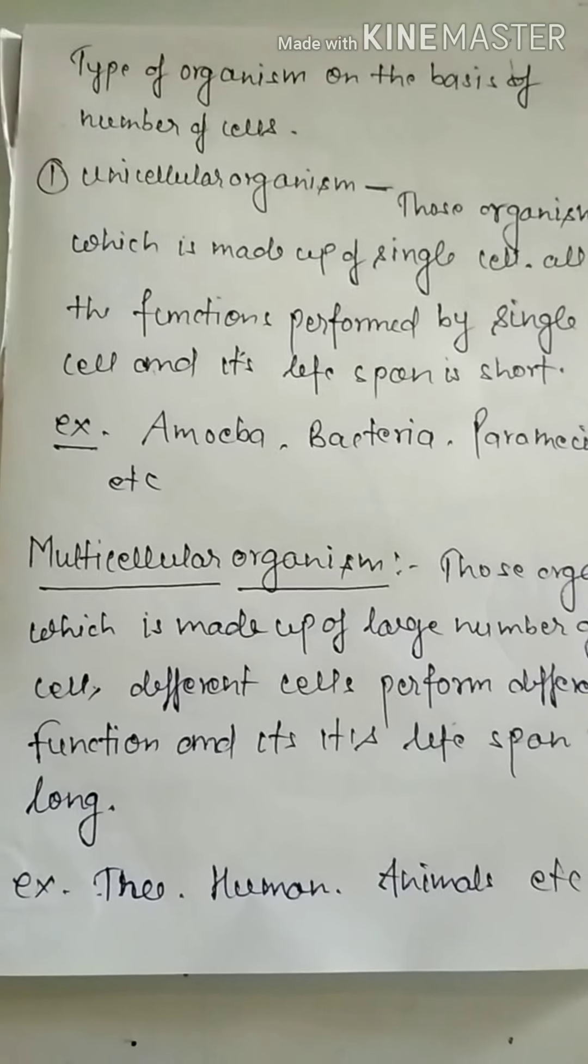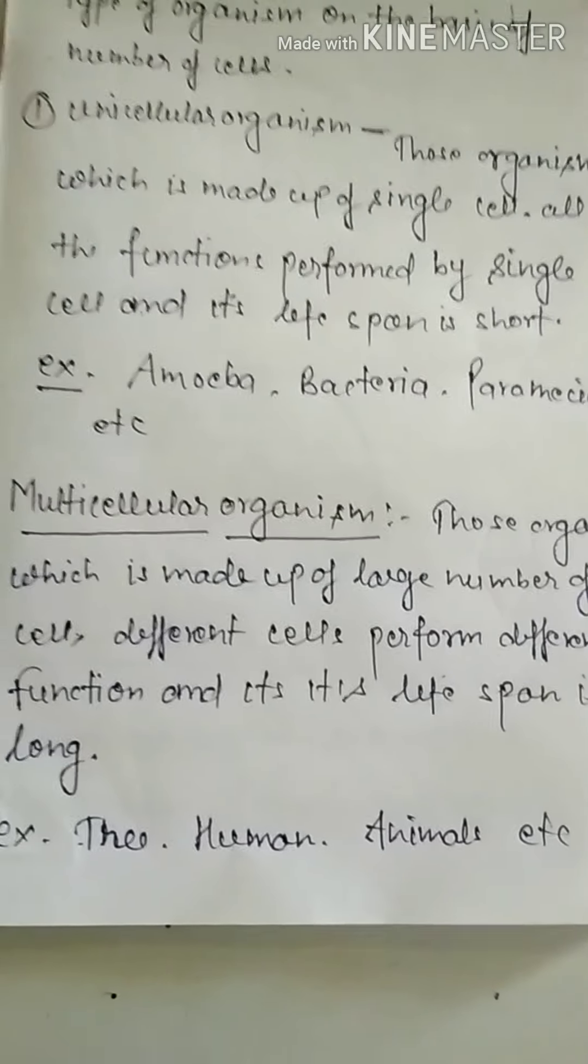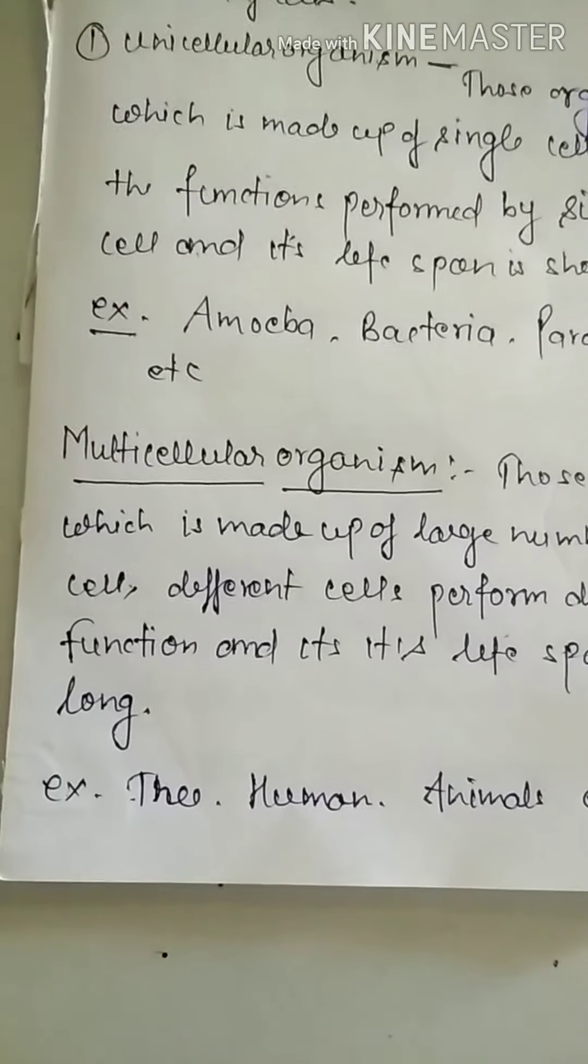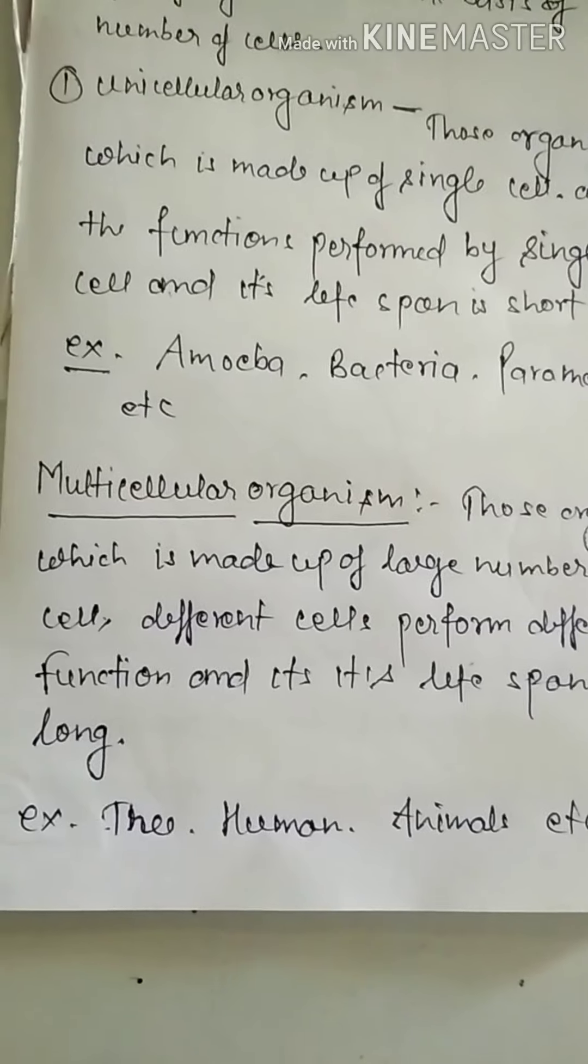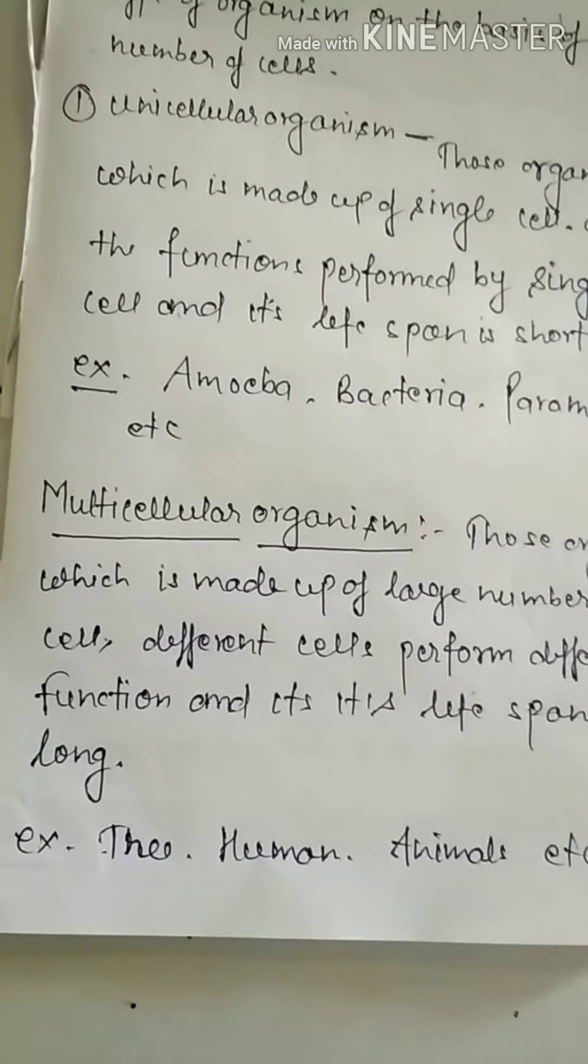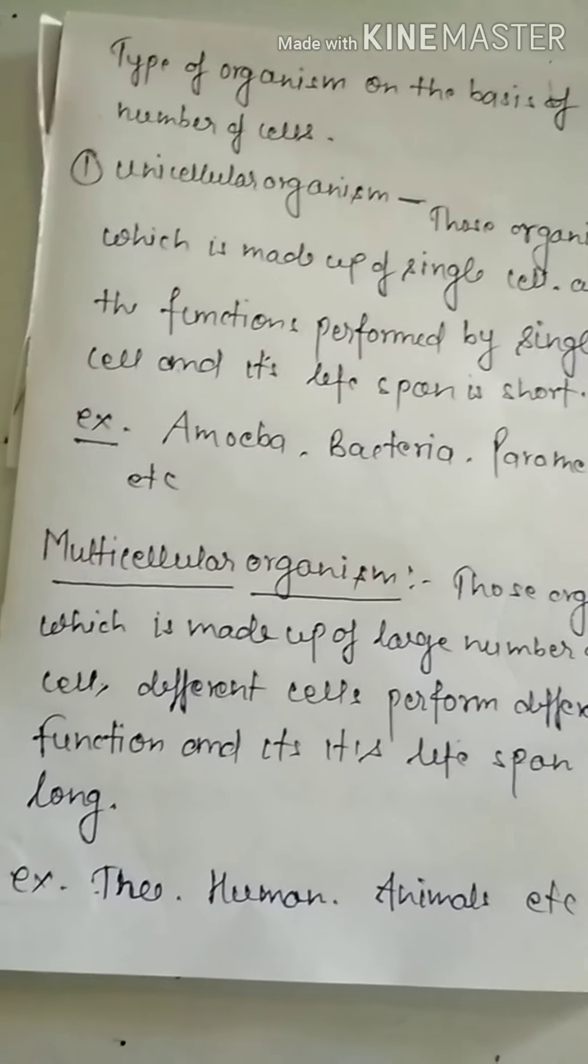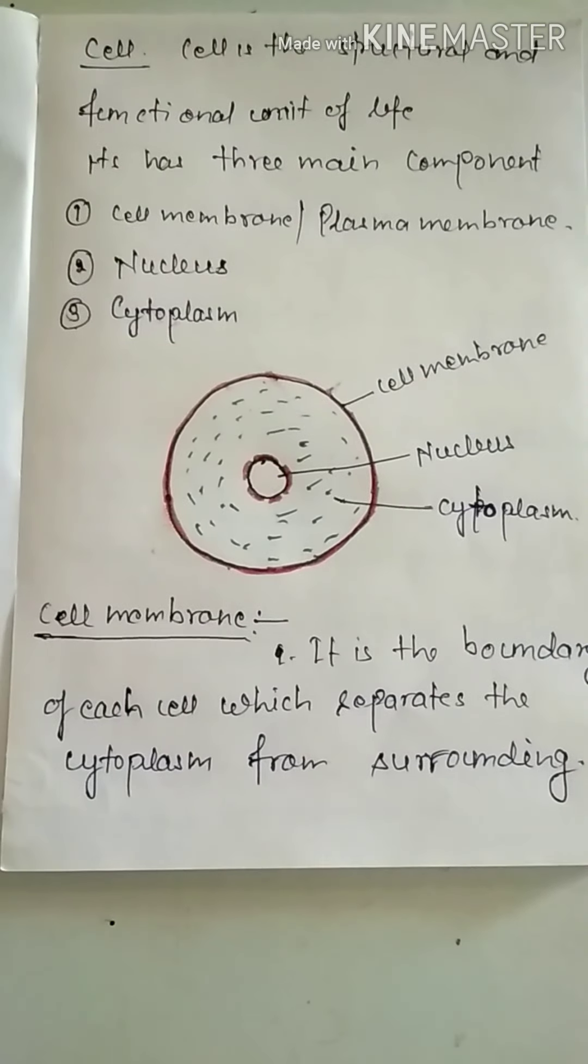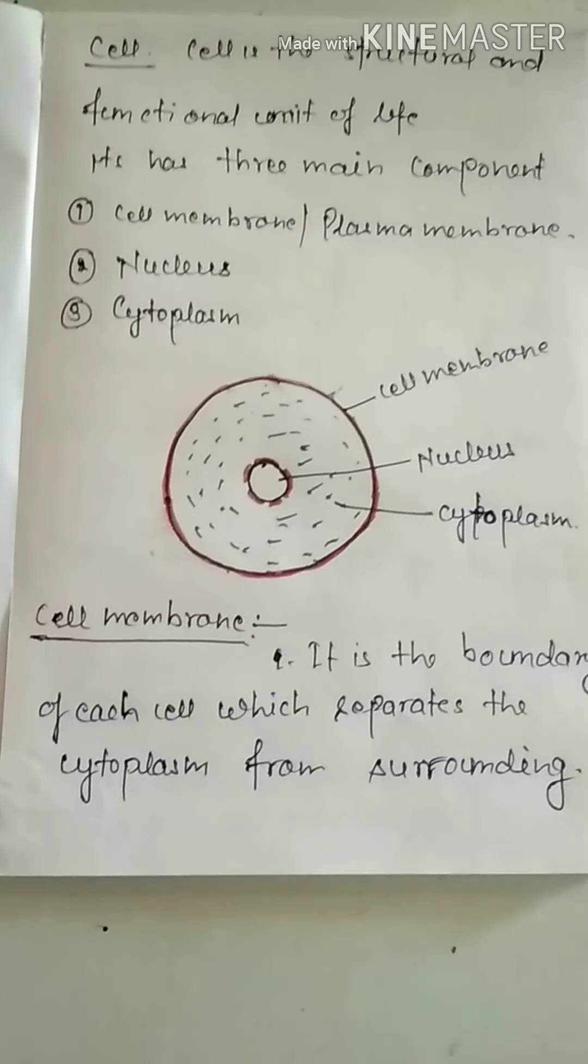Multicellular organisms are those organisms which are made up of large number of cells. Different cells perform different functions and its life span is long like human beings, animals, and all living things.